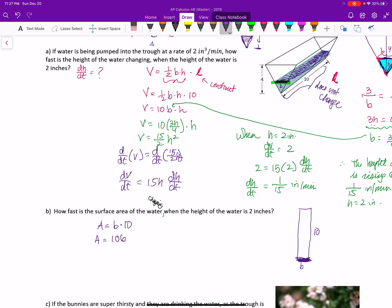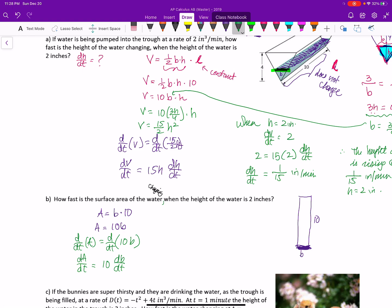I'm taking the derivative with respect to time. So d/dt of A is equal to d/dt of 10b. So dA/dt is equal to 10 db/dt. They're directly proportional to each other. I need to find dA/dt is what I want. What's db/dt?